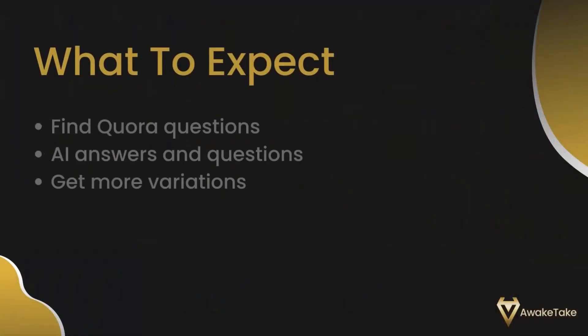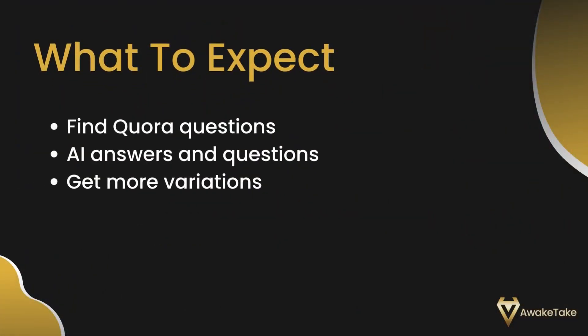But to get good quality traffic from Quora, and a lot of it, you need to know how to find the best questions and then answer a lot of them to start getting traction, because even cherry-picked questions might not always perform as you expect them to. That's why in this video I'm going to show you how to find Quora questions, how to generate Quora answers and questions with Nietzsche's AI tools, and even how to get more variations so that you have multiple ways to answer the same question or similar questions.